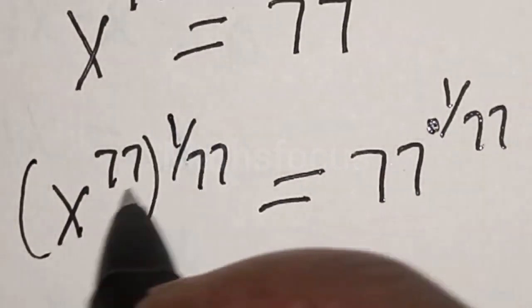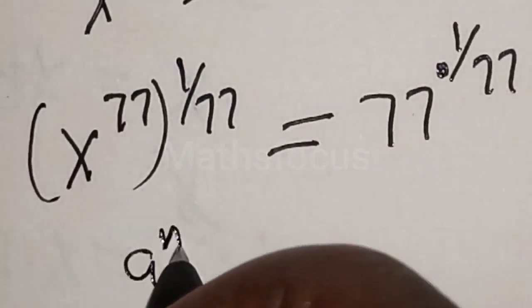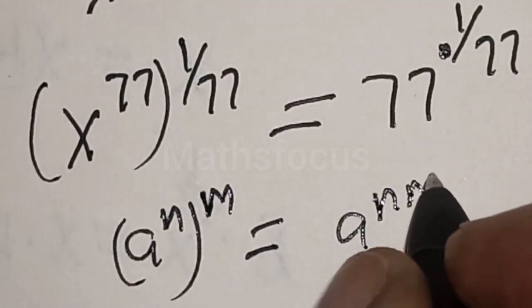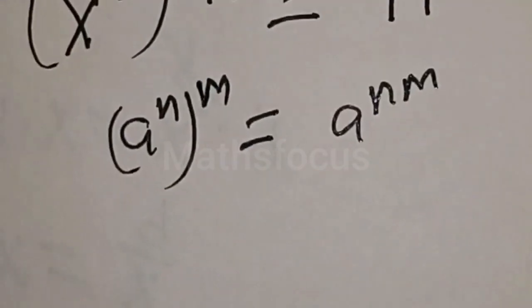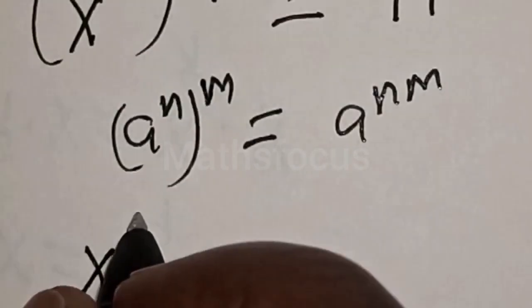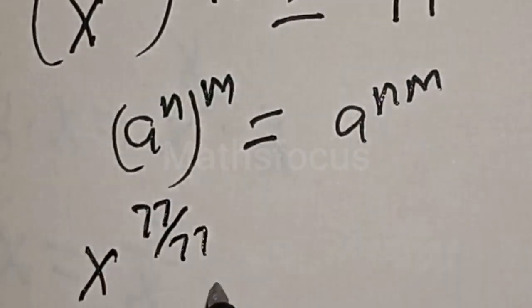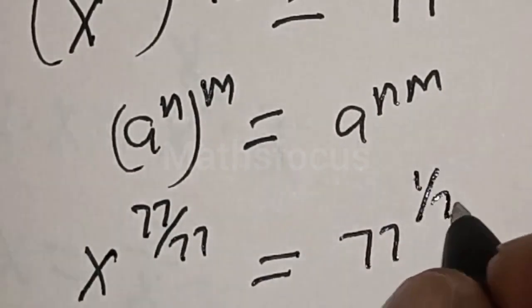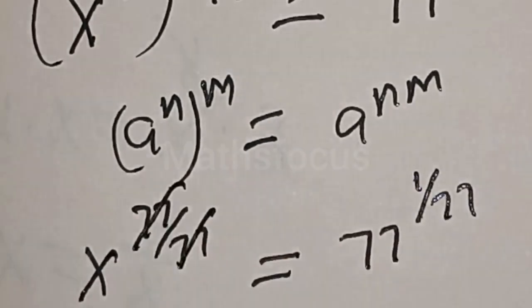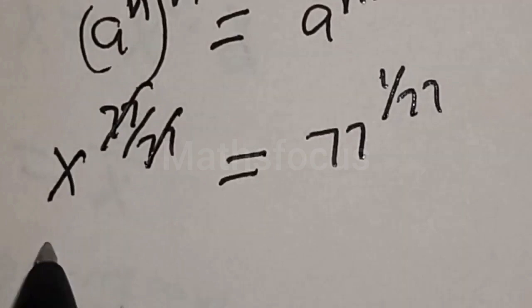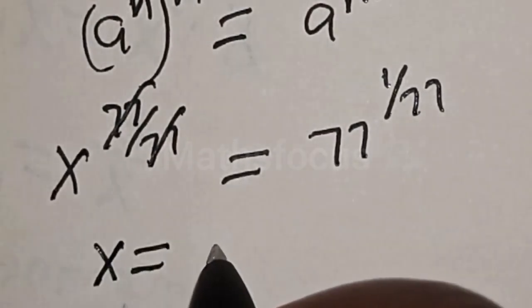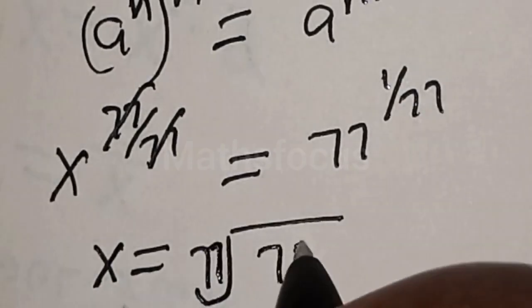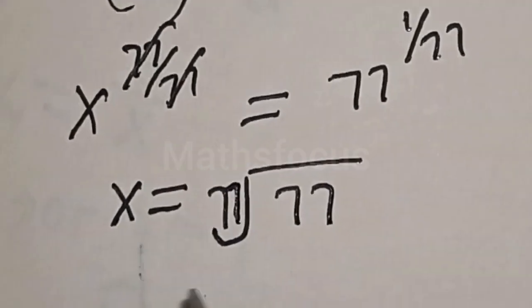Also note that a raised to power n raised to power m is equal to a raised to power n times m. Applying this, s raised to the power 77 over 77 is equal to 77 raised to the power 1 over 77. The 77s cancel, so s is equal to the 77th root of 77.